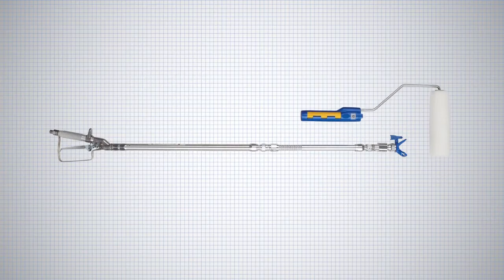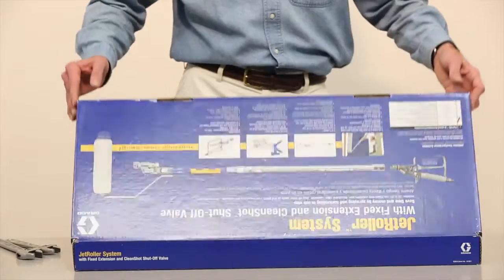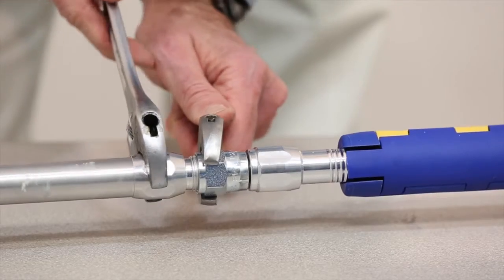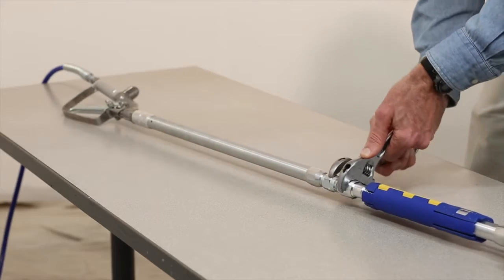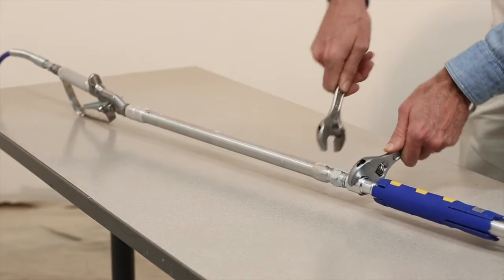The Jet Roller is uniquely designed as three tools in one. It's easy to set up right out of the box. Just connect the two extensions, tighten the fittings with two wrenches, then adjust the extension at the swivel to align the handle to a comfortable position with the roller head.